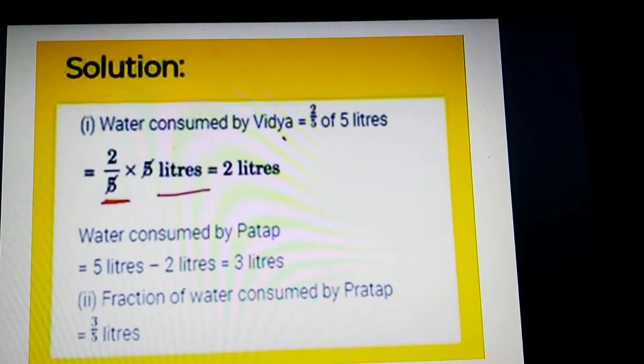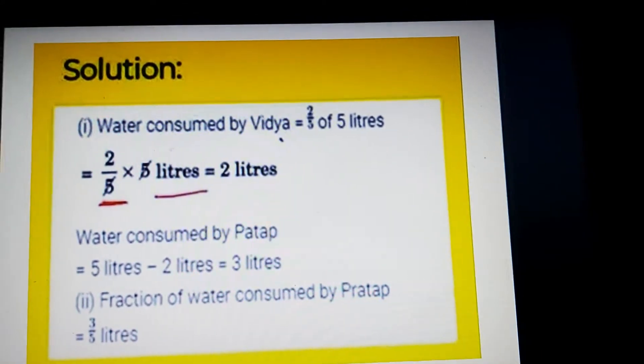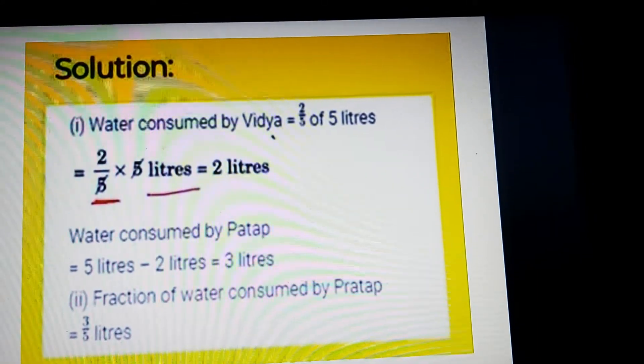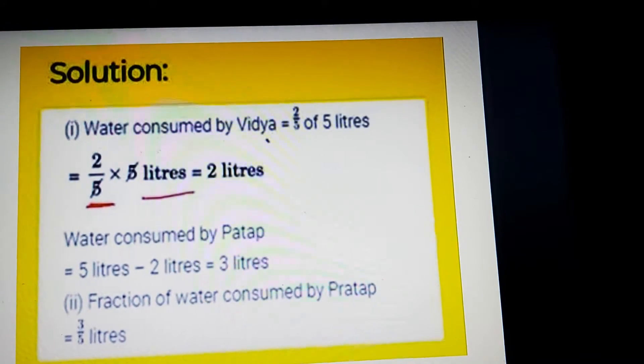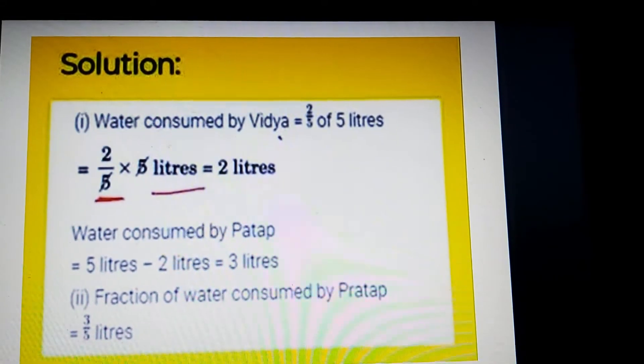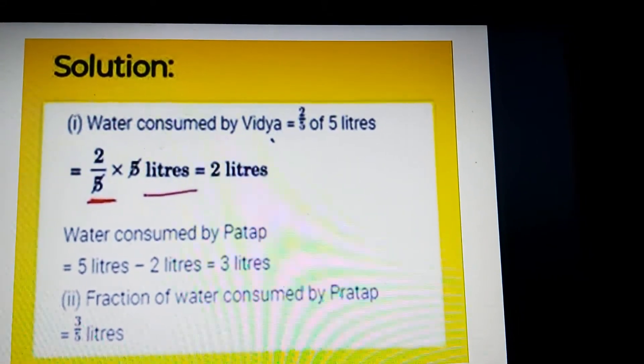Now water consumed by Pratap. Total water is 5 litres, so we can subtract 2 litres. 5 litres minus 2 litres equals 3 litres. So water consumed by Pratap is 3 litres.